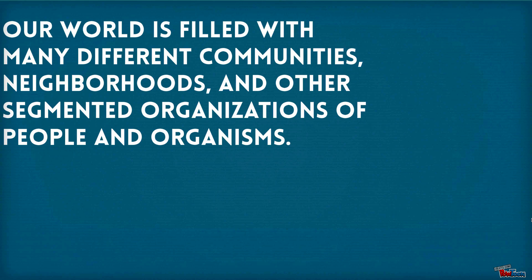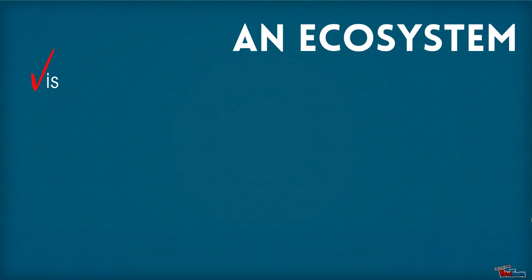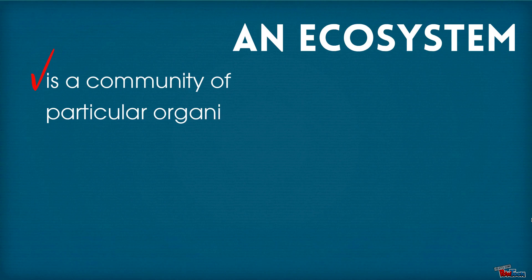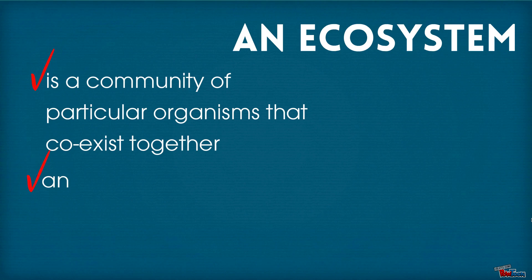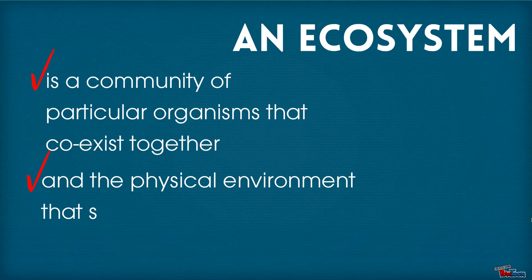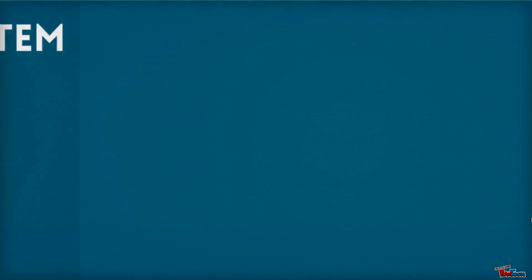Our world is filled with many different communities, neighborhoods, and other segmented organizations of people and organisms. An ecosystem is a community of particular organisms that coexist together and the physical environment that surrounds them.